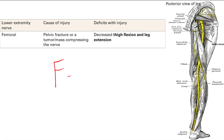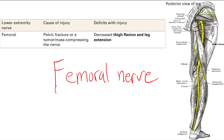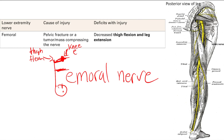This is the femoral nerve. What we're going to do is draw a little figure — a head, a body, an arm, and a leg. This is his thigh, and he is in thigh flexion. We draw his knee, and his knee is in extension. That's the function of the femoral nerve. Just remember that big F — thigh flexion and knee extension.